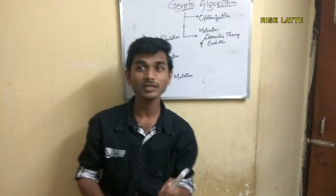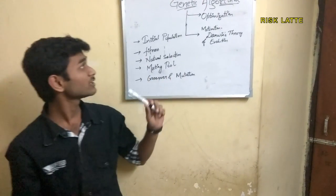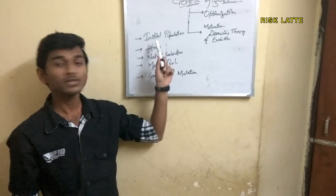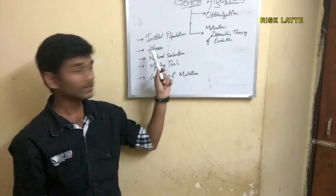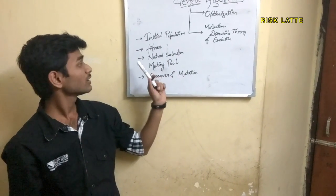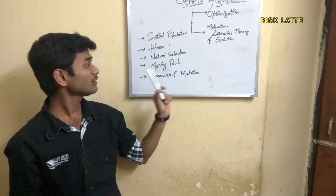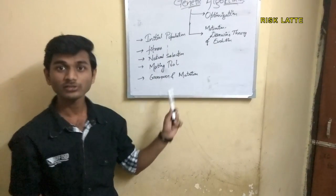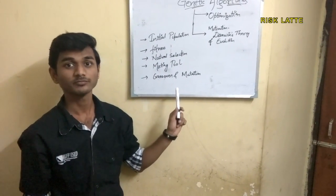The main steps of the Genetic algorithm are: populating the initial population, fitness function, natural selection, mating pool, crossover, and mutation.